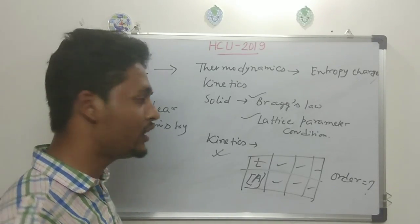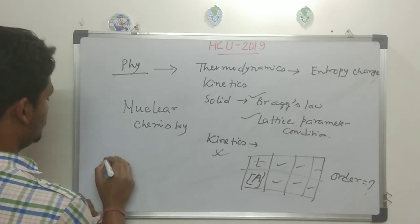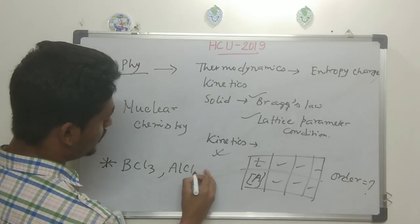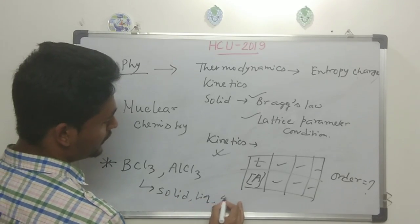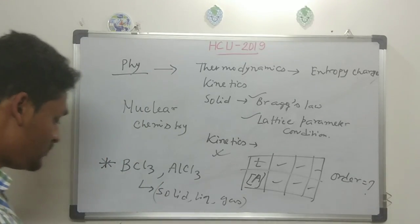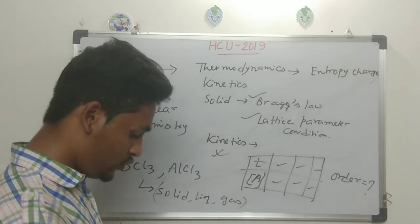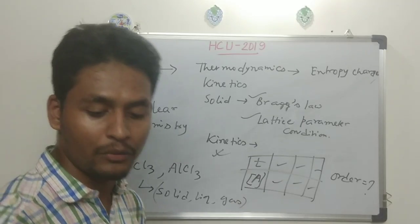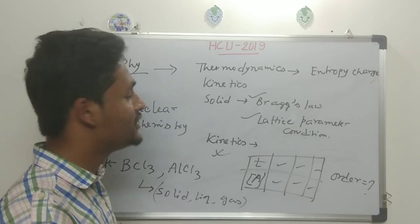One more specific and important topic is BCC and FCC structures in solid, liquid, and gaseous phases — what is the structure and what is the coordination number. Overall, these are the things I have seen analyzing the HCU papers. Practice previous year questions; since you already have JAM preparation, just start practicing specifically for HCU.